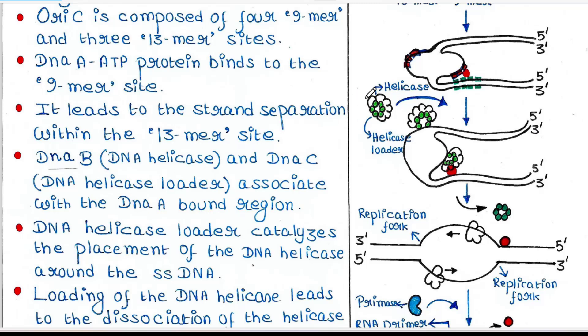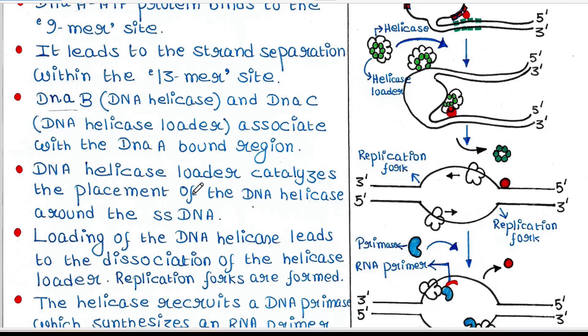DNA helicase loader catalyzes the placement of DNA helicase around the single-stranded DNA. Here you can see this is the replication fork. Replication forks are generated on both sides. These structures resemble a fork, hence the name.